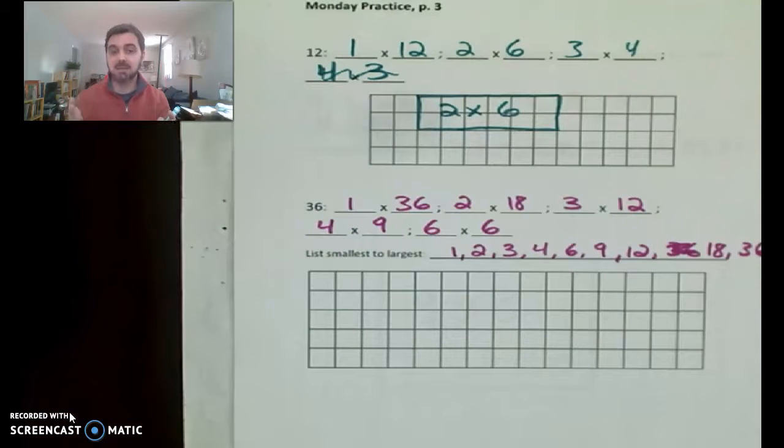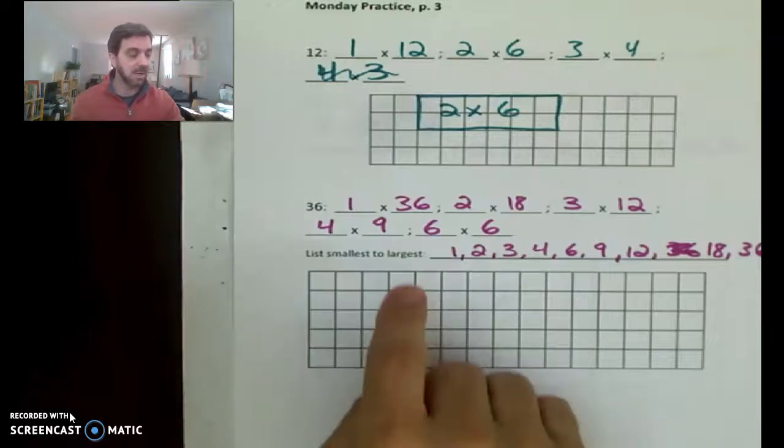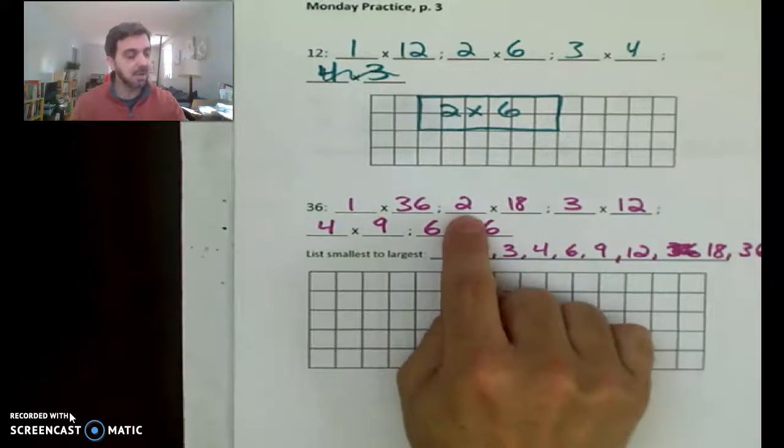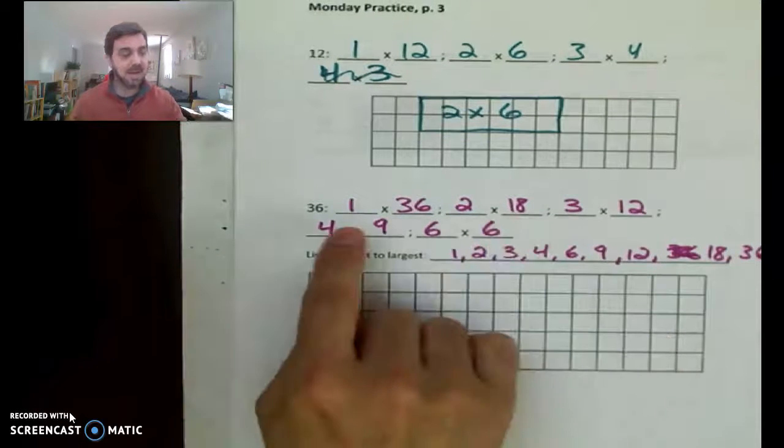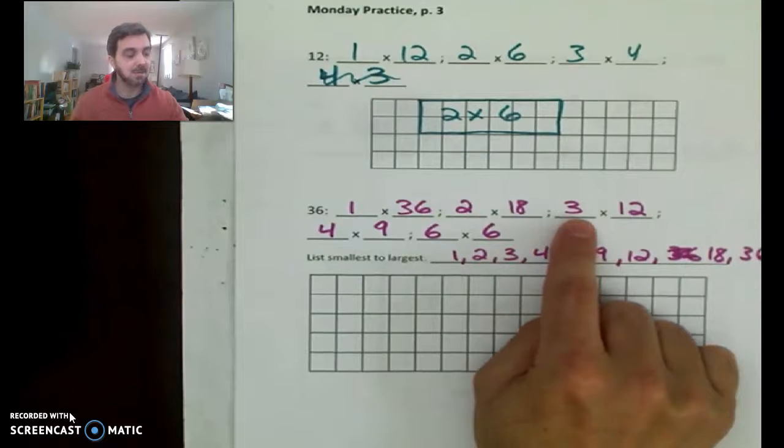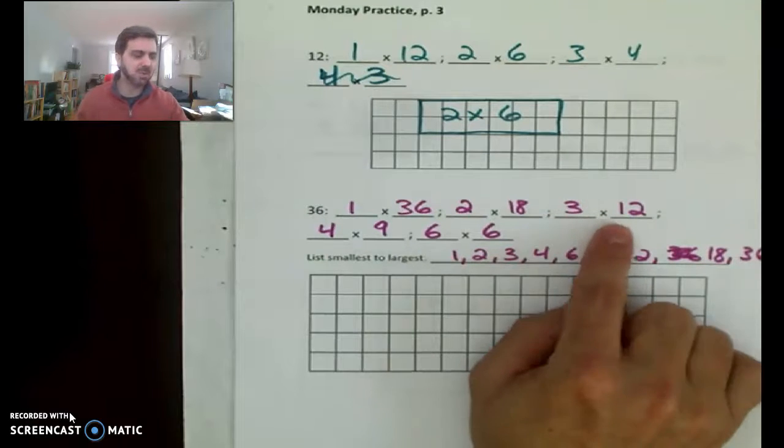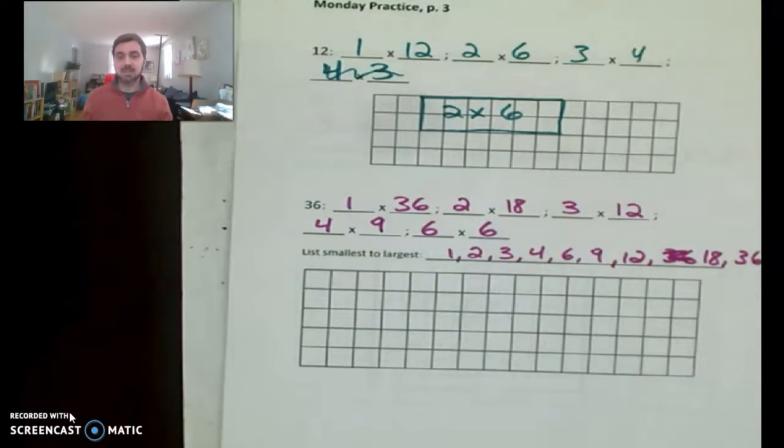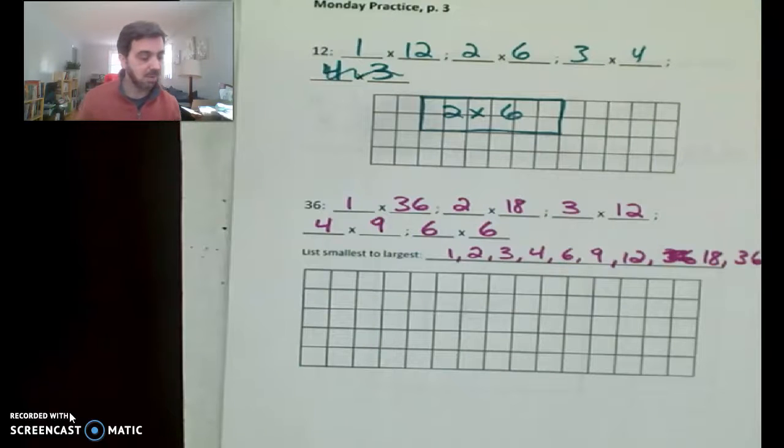36 has a lot. And I mean, a lot of factor pairs. It has five of them, right? One times 36, like every number has one and itself. It has two and 18 because half of 36 is 18. This might've been one I'm not sure you would have known, three times 12. Okay. If you have three dozen eggs, you have 36 eggs. Okay. And then you should know that four times nine is 36 and six times six is 36. And that would have been on your multiplication chart as well. By the way, real quick.